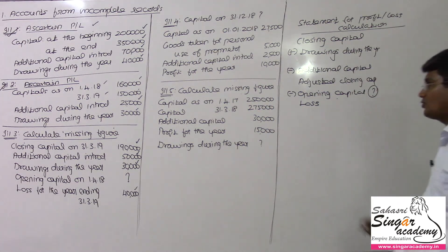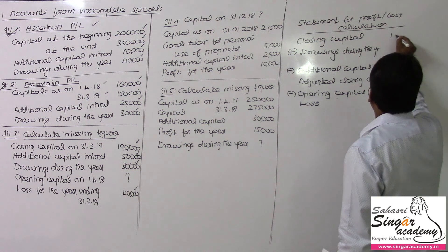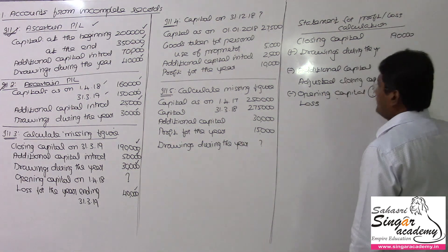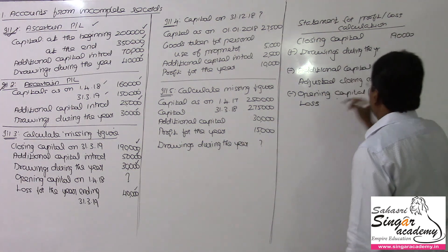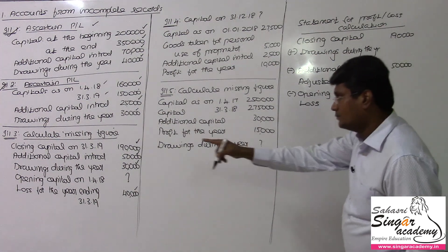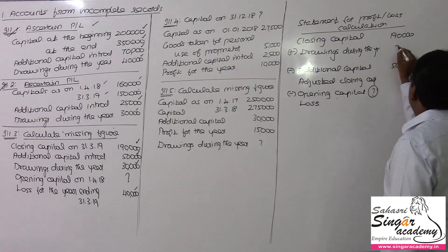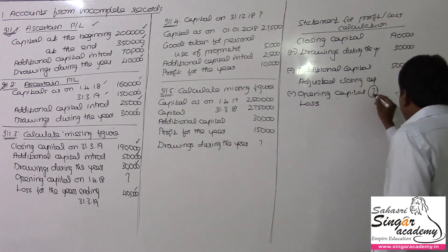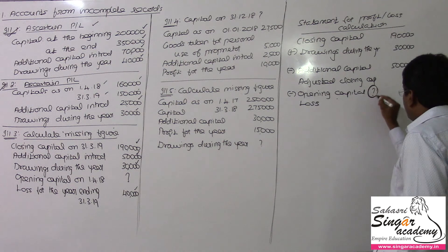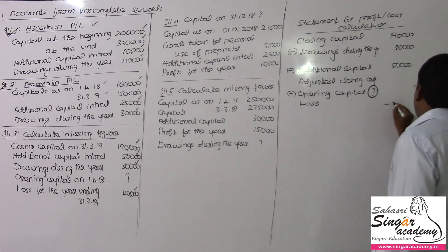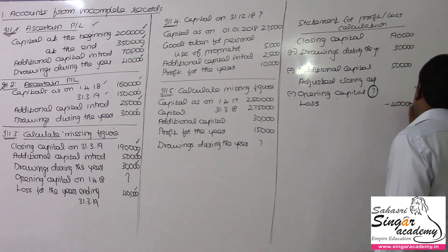So, closing capital is 190. Additional capital being 50. Drawings during the year are 30. Opening capital is to be calculated. Loss for the year is 40,000 — a negative value. Right.